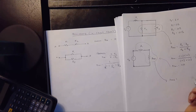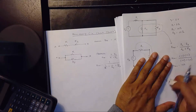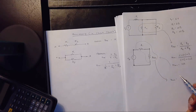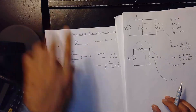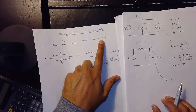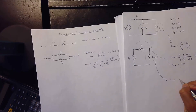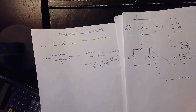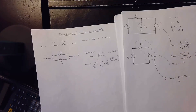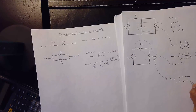We create a new variable, REQ2, for this intermediate step — you need to learn to make up variables as you go. REQ2 is a series circuit, so REQ2 equals R1 plus REQ1. That gives us 5 plus 5, which equals 10 ohms.